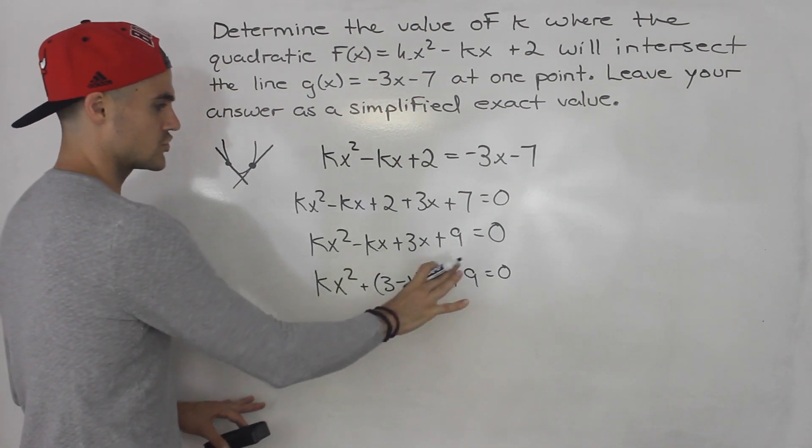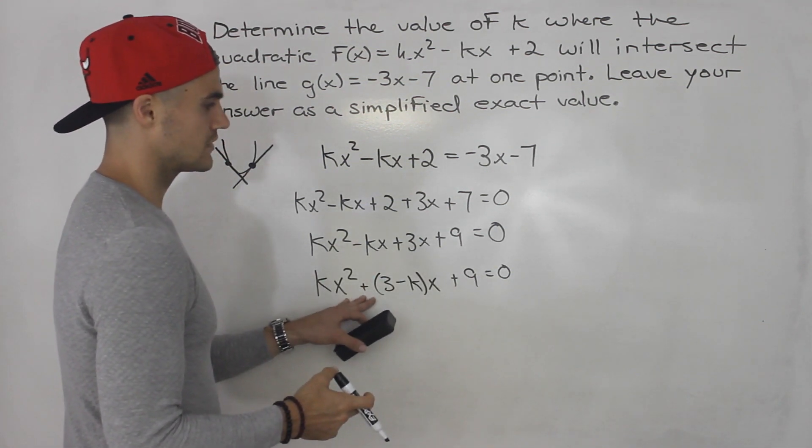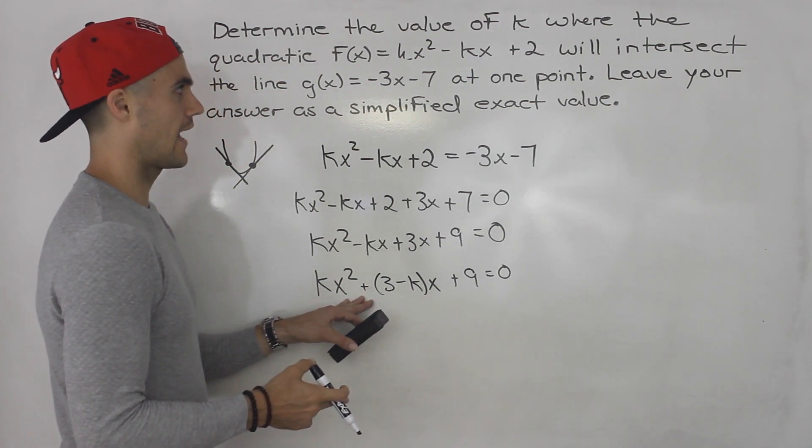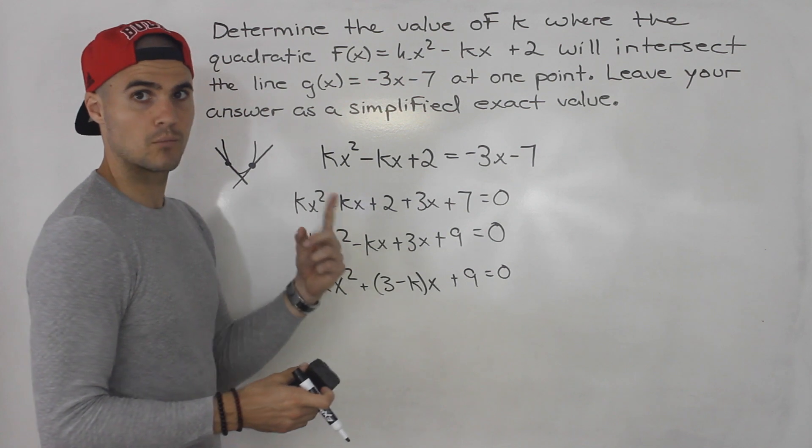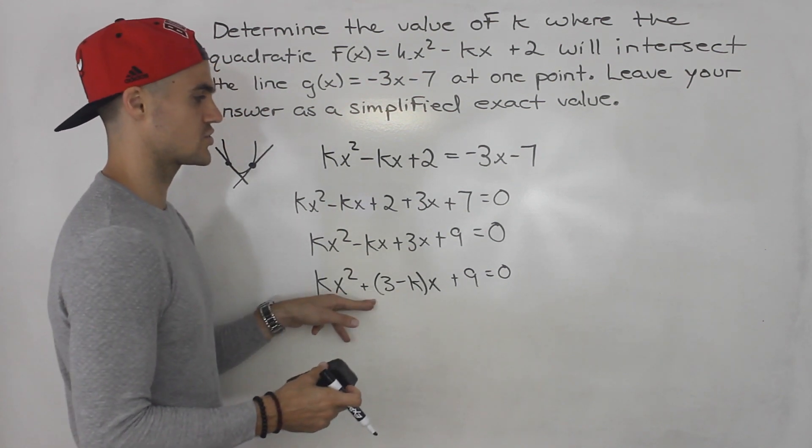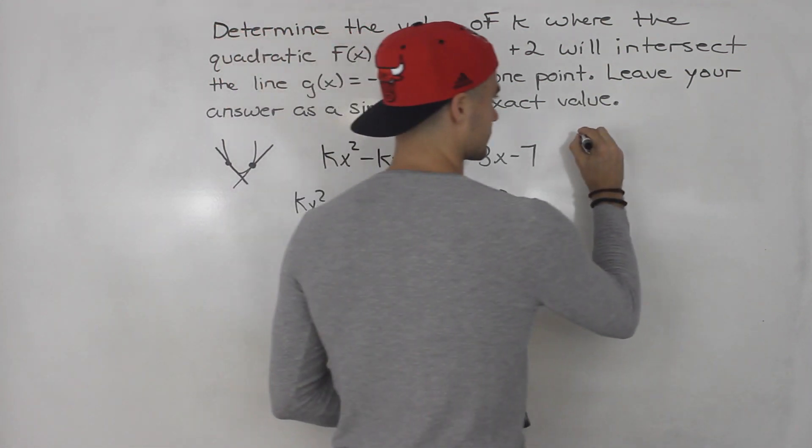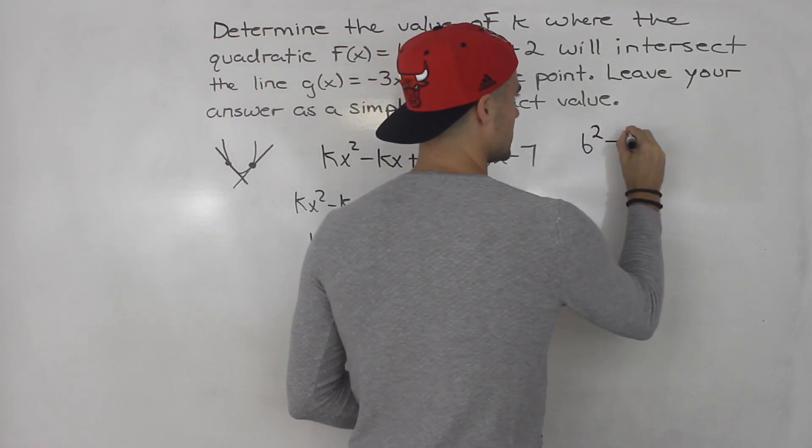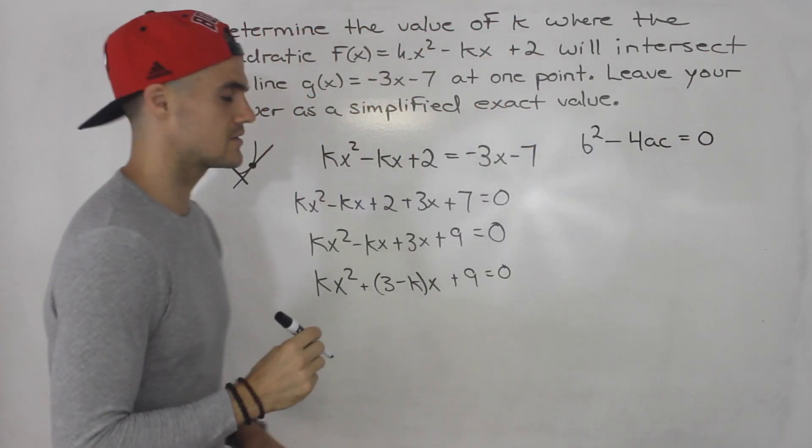So now we have a quadratic equation to solve. And if we're solving this quadratic equation, and the line and the quadratic are going to intersect at one point, we can only have one solution. And if you remember, if we only have one solution, that means the discriminant b² minus 4ac has to equal 0.